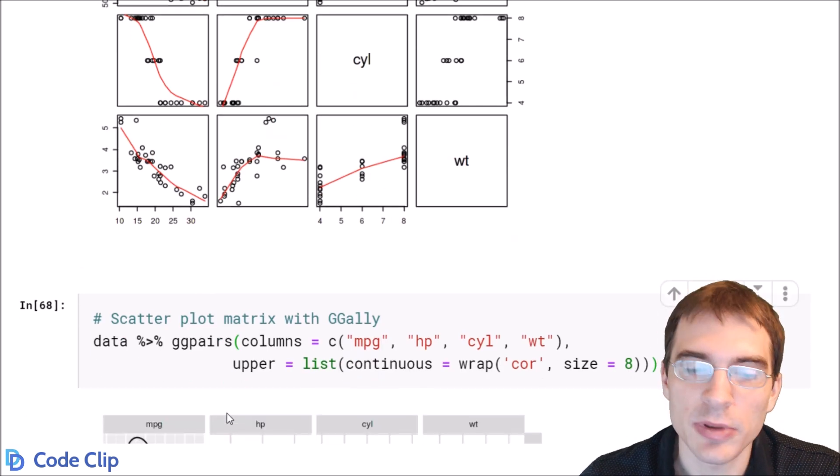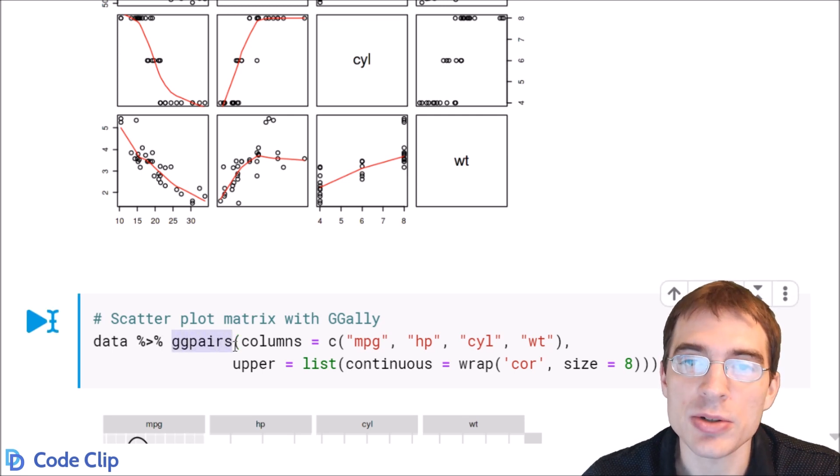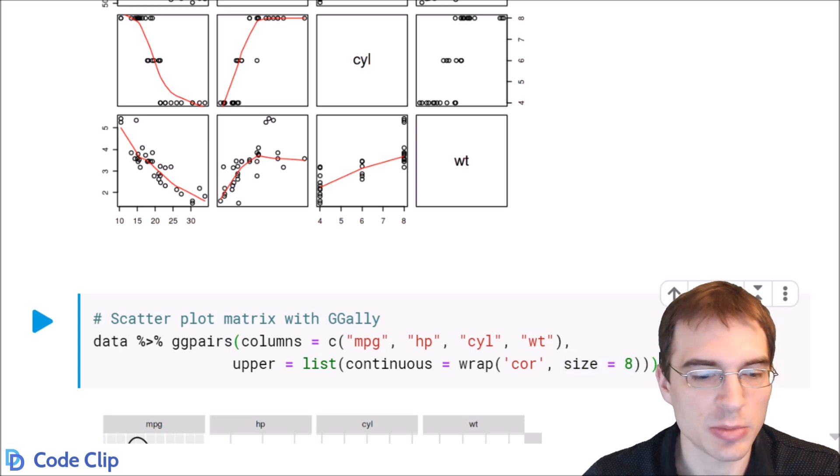But now we'll show how to do the same thing using ggally. What you want to do after loading in the package and ggplot, which it's built on top of, you just pass the data to this function ggpairs, then you pass in the columns you want to plot. This last line here is just setting up some different chart options. In this case, I wanted to set the size of the text in the upper half of the plot to size 8 so we can see it better.